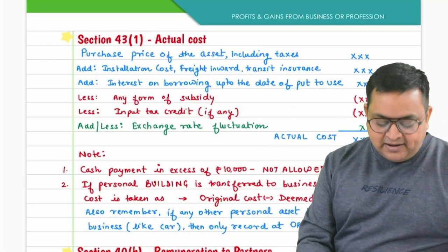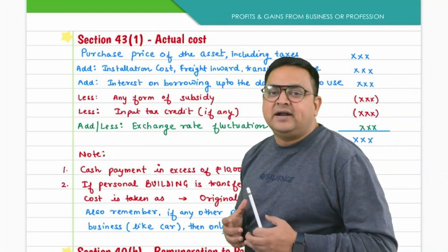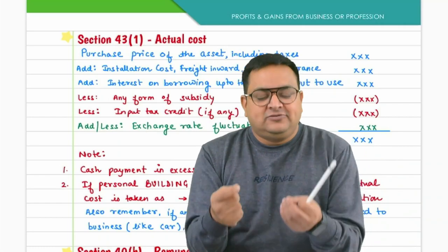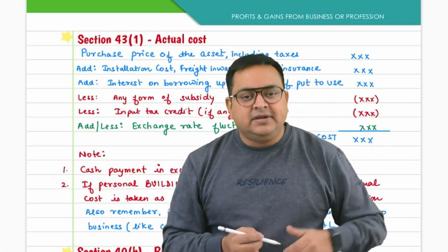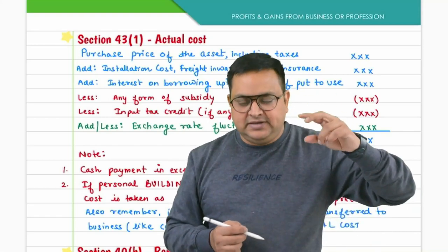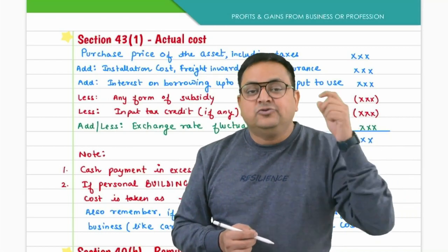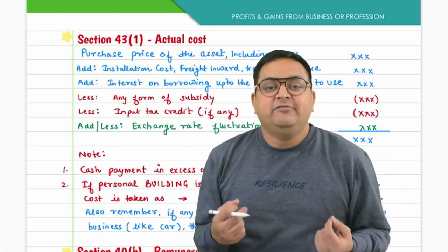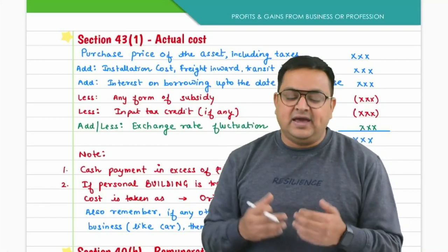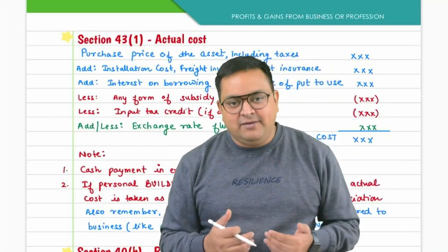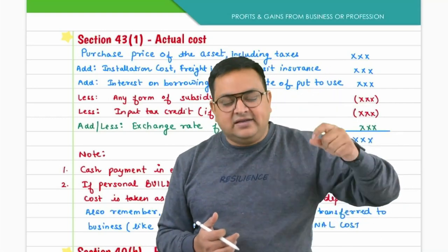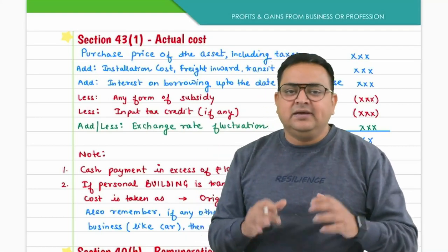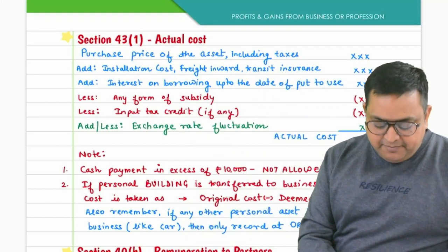If there is any exchange rate fluctuation on an asset purchased from outside India — say paid in US dollars — adjustments must be made. If the foreign currency increases in value, you pay more, so the extra amount increases actual cost. If the foreign currency depreciates, you save some amount, which reduces actual cost. Whatever extra is paid or saved due to foreign currency fluctuation must be adjusted in the actual cost.